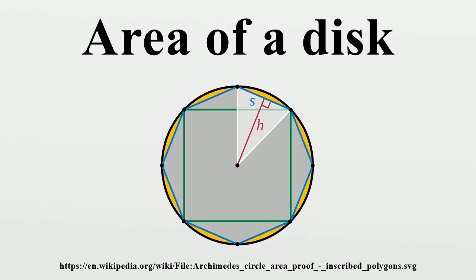In his book Measurement of a Circle, the circumference is 2 pi r, and the area of a triangle is half the base times the height, yielding the area pi r squared for the disk.